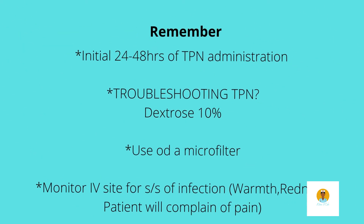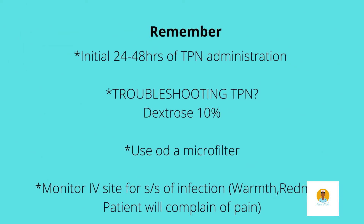We weigh them daily and check their electrolyte levels as well as their blood glucose. When we first put a patient on TPN, during the first initial 24 hours, we normally check their blood glucose levels every four to six hours to prevent the patient from going into a hypoglycemic state.